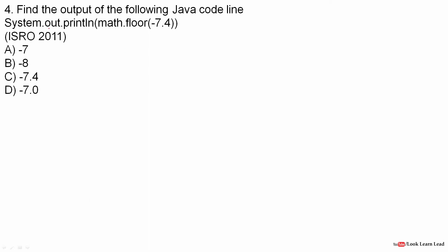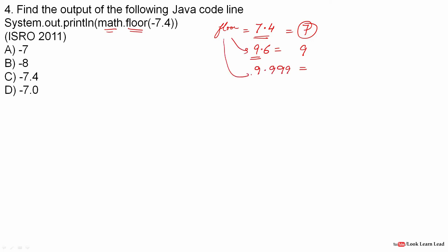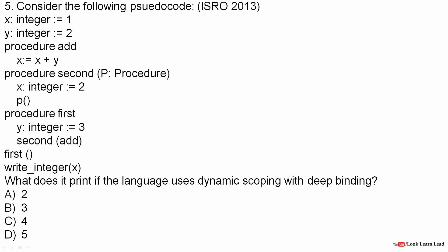Next question: find the output of the following code. We are using the Math.floor function with 7.8. Floor returns the largest integer less than or equal to the value. For example, floor(7.4) is 7, floor(9.6) is 9. But here the value is negative: floor(-7.4) would be -8, not -7, because we take the lower integer. So the answer is -8.